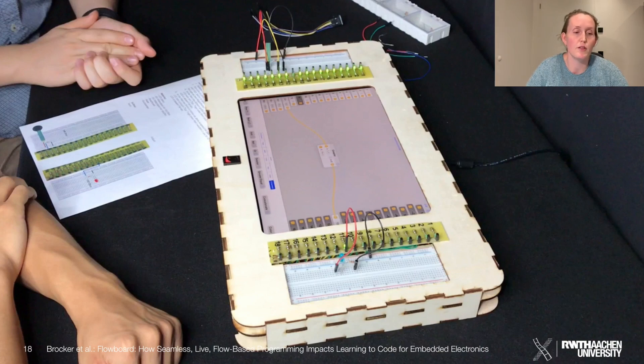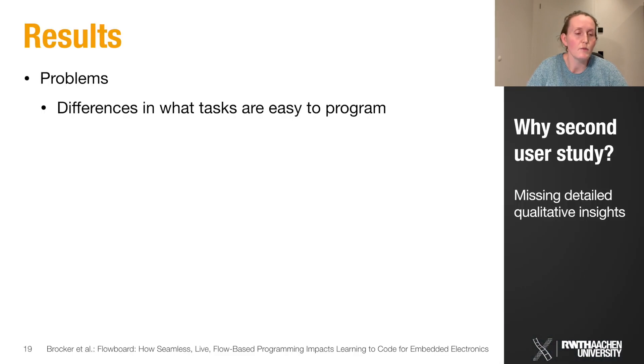But we also saw confusion happening. Interestingly, some of our users even thought that the yellow connections in the editor were power cables through which the current flows. But actually, data flows through them, and the current only flows through the physical wires. Also, we observed that different tasks were easy to program depending on the programming paradigm. For example, for Flowboard, tasks were easy when the participants had an input and an output component that the user could connect via the iPad directly. But when they had to program a heartbeat to let an LED blink, the students were challenged in the Flowboard condition.